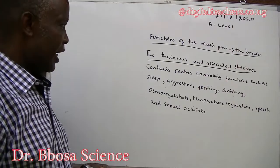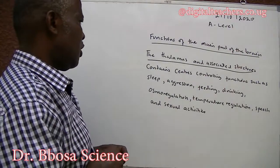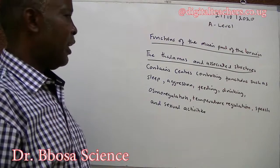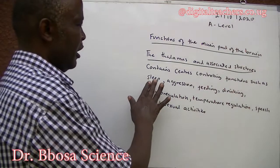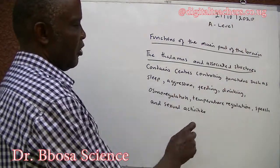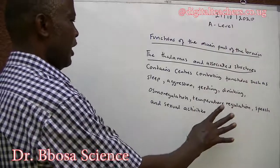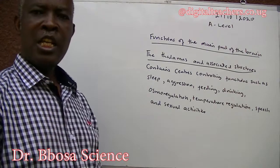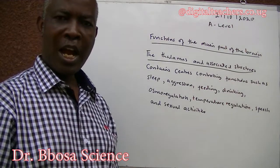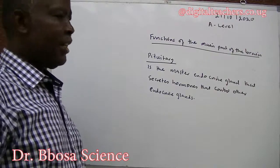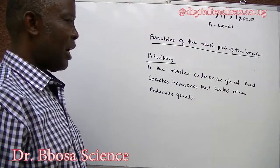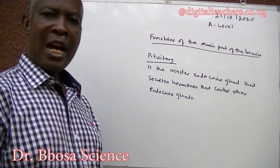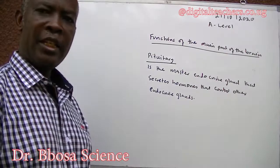The thalamus and associated structures contain centers controlling functions such as sleep, hunger, feeding, drinking, osmoregulation, temperature regulation, speech, and sexual activities. The pituitary is the master endocrine gland that secretes hormones that control other endocrine glands.